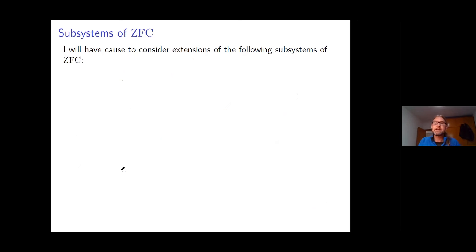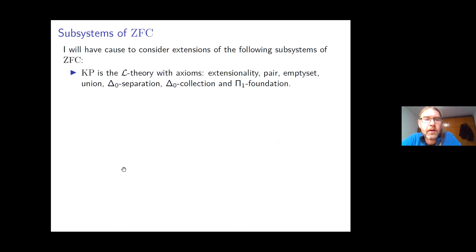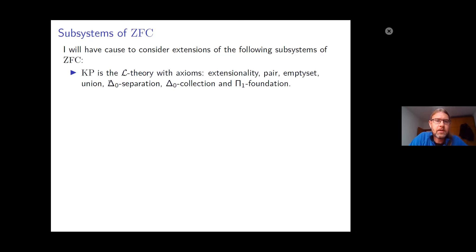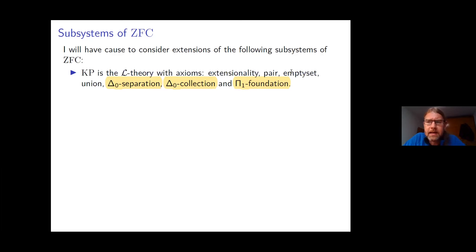I'll be talking about end extending subsystems of ZFC. The weakest subsystem I'll consider is Kripke-Platek set theory, KP, whose axioms are extensionality, pair, empty set, union, bounded separation (separation for Δ₀ formulae), bounded collection, and Π₁ foundation. Some authors include full class foundation in KP, but for this talk I restrict foundation to Π₁ classes. I think this is becoming standard nowadays.